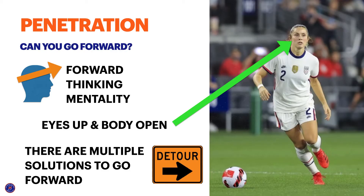As a review, we'll look at penetration. There are three ways we can penetrate: with the dribble, the pass, or the shot. We simply ask ourselves, can we go forward? We need to have a forward-thinking mentality, our eyes up, our body open to advance, and understand that there are multiple solutions to go forward.